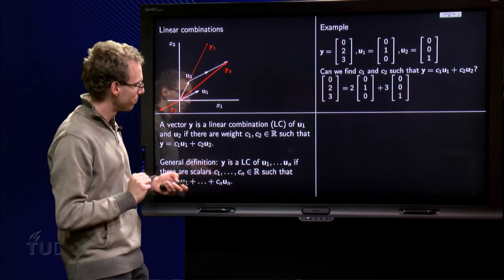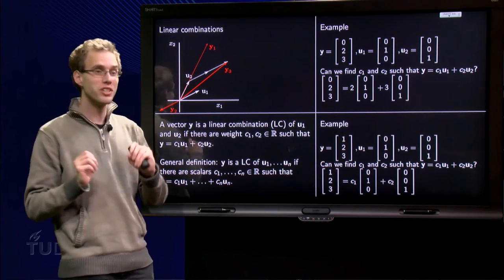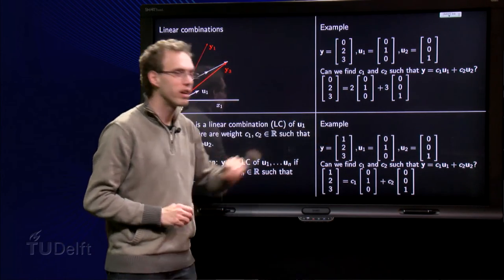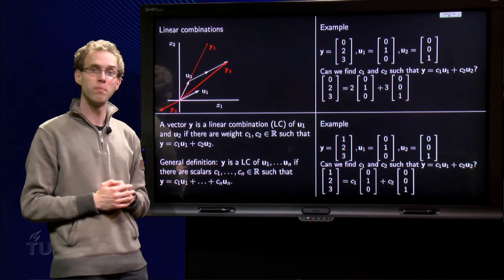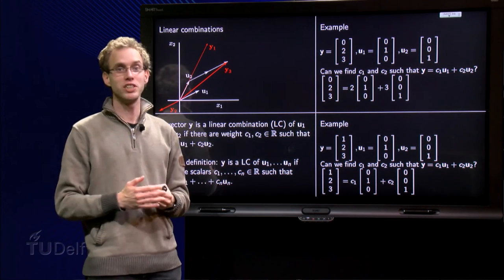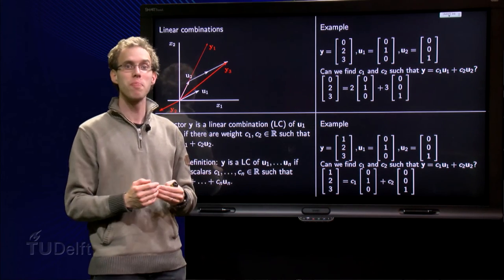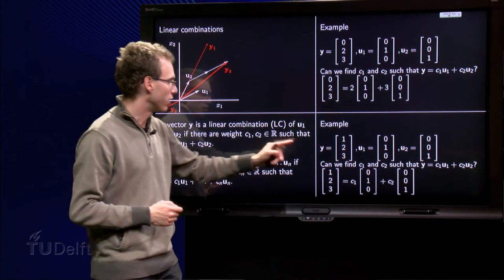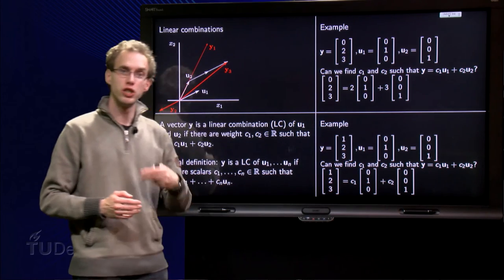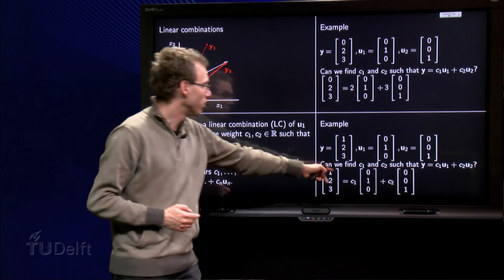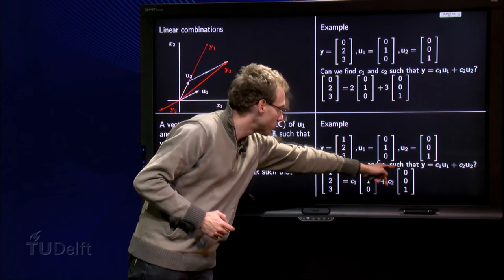Next example. Almost the same y, but now we have a 1 over here instead of a 0. Again, the same question, is y a linear combination of u1 and u2? So I wonder, can I find weights c1 and c2 such that y equals c1 times u1 plus c2 times u2?